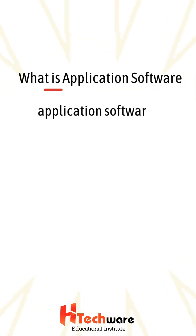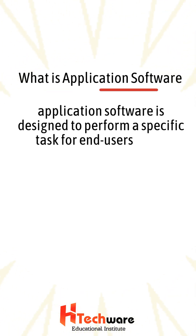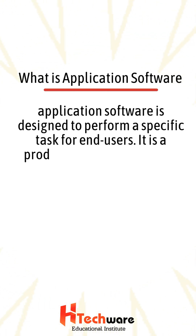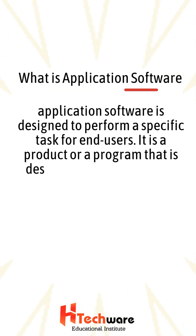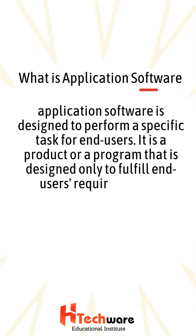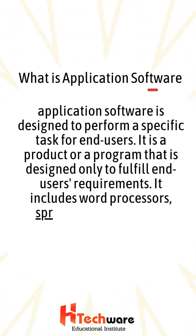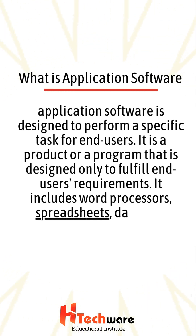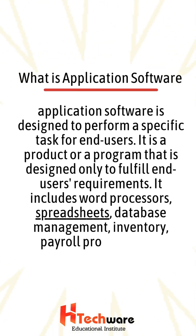What is application software? Application software is designed to perform a specific task for end-users. It is a product or a program that is designed only to fulfill end-users' requirements. It includes word processors, spreadsheets, database management, inventory, payroll programs, etc.